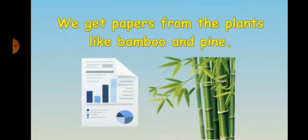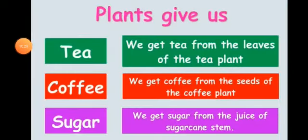We get tea also from the leaves of plants. We also get coffee — coffee is made from the seeds of the coffee plant; those small brown seeds give us coffee. And sugar — we get sugar from the juice of sugarcane.